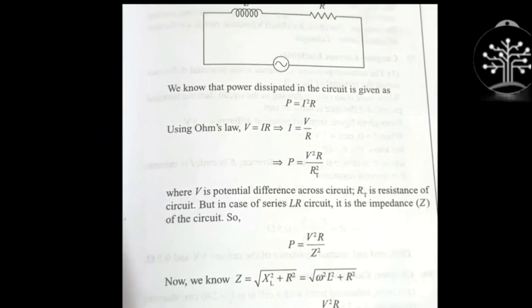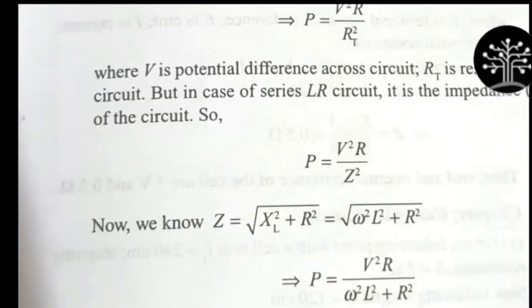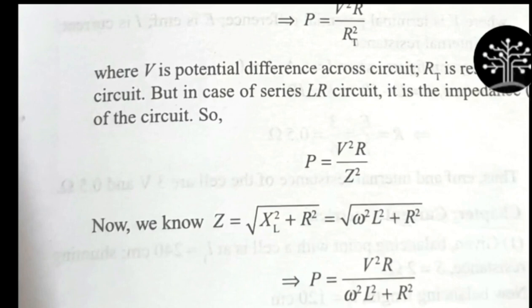We solved this question without setting up any diagram or derivation, just by using the option comparison trick. Normally it takes at least two to three minutes, but KCT gives 60 questions in 60 minutes - one minute per question. Using this trick you can solve it in less than one minute, saving time for concept-based questions. That way you can take more marks overall. Let's move to our next question.